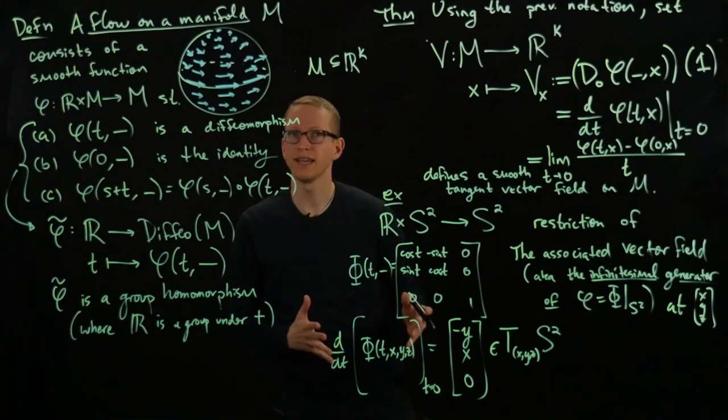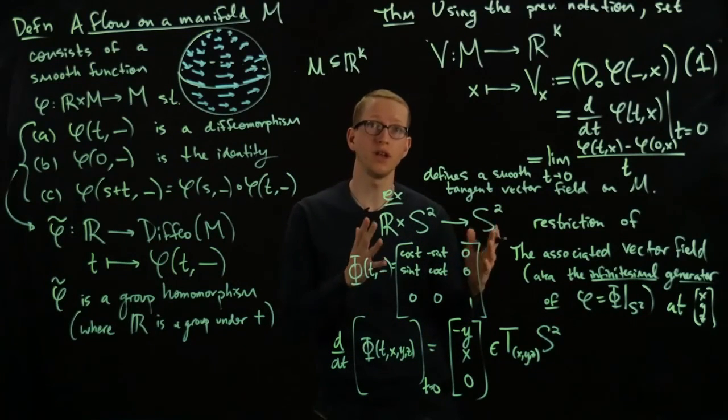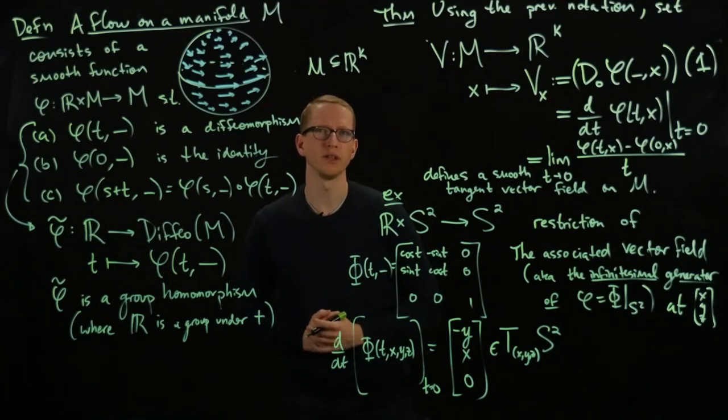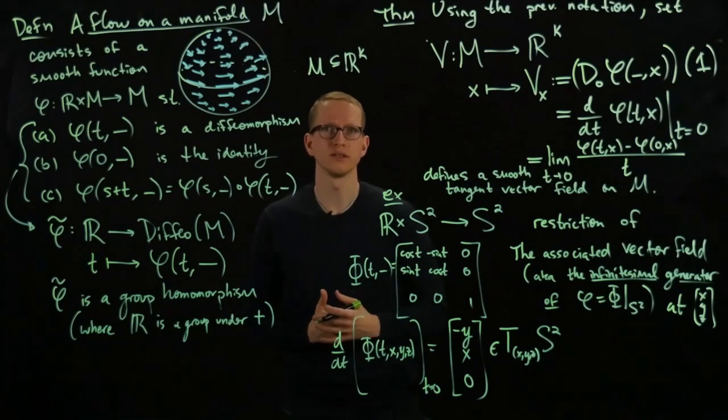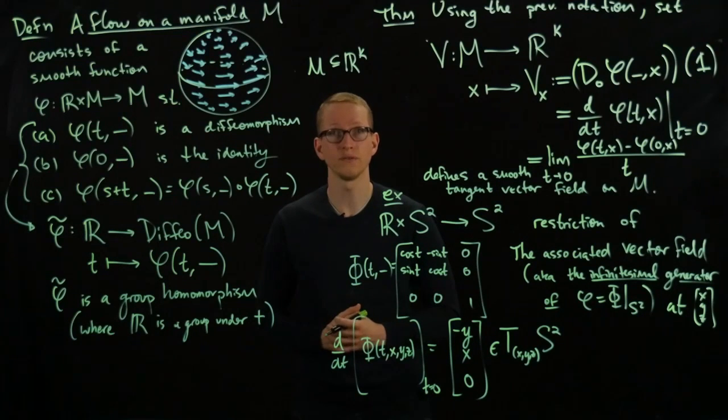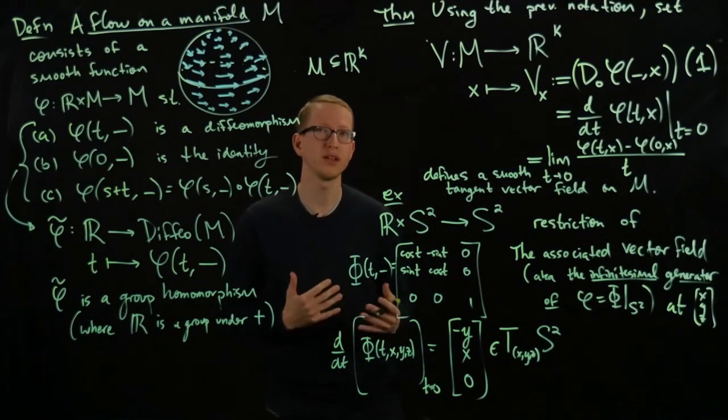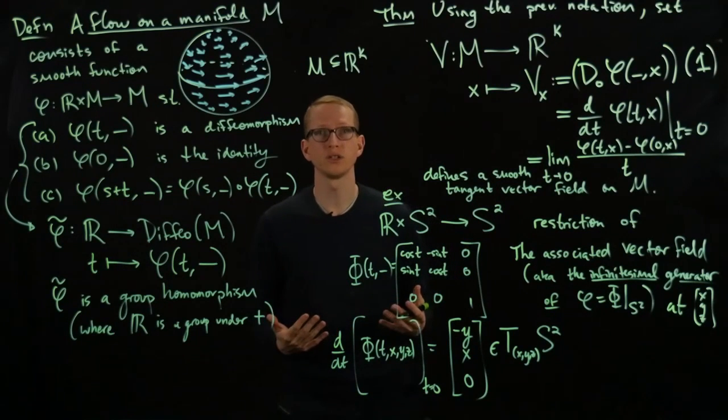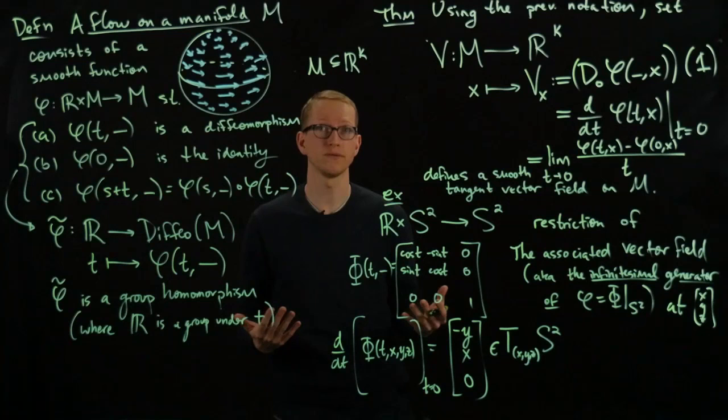So you might ask, if I'm given a flow, I can get a vector field through this procedure. But what if I'm given a flow? We've studied differential equations in Euclidean space, and we know that we can calculate integral curves for them. But we don't yet know exactly when we can do that.